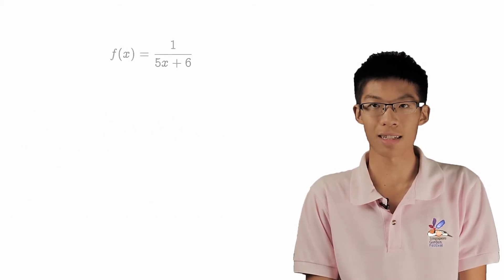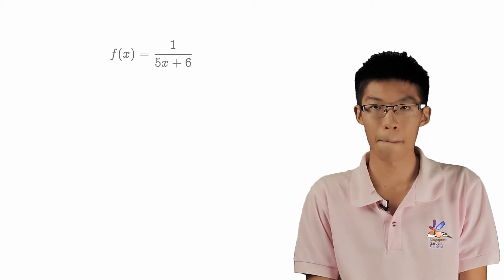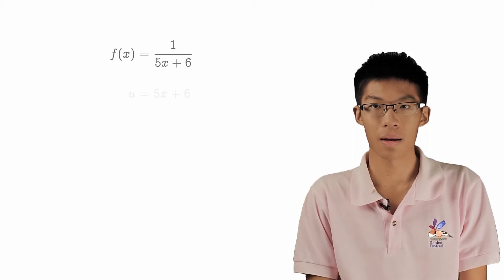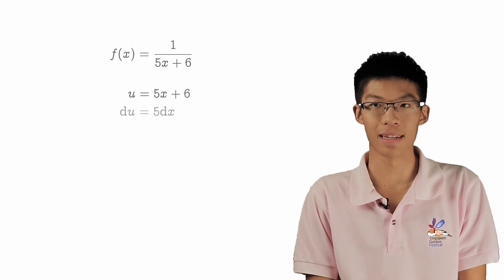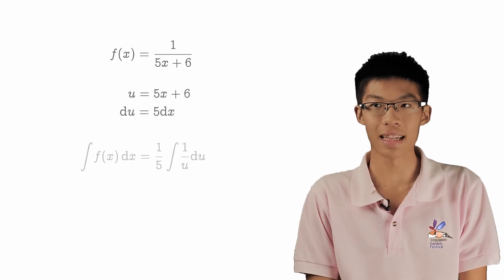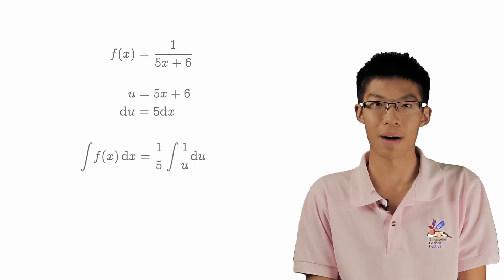So let's go through a simple example. If you notice, a shortcut would be to integrate the original function and eventually divide by a.